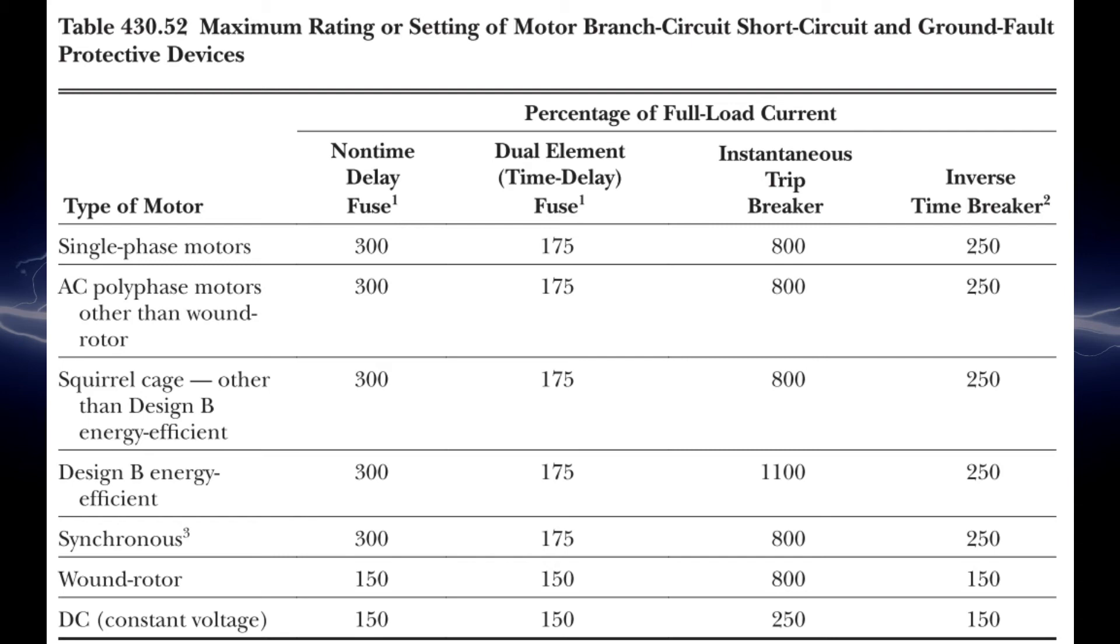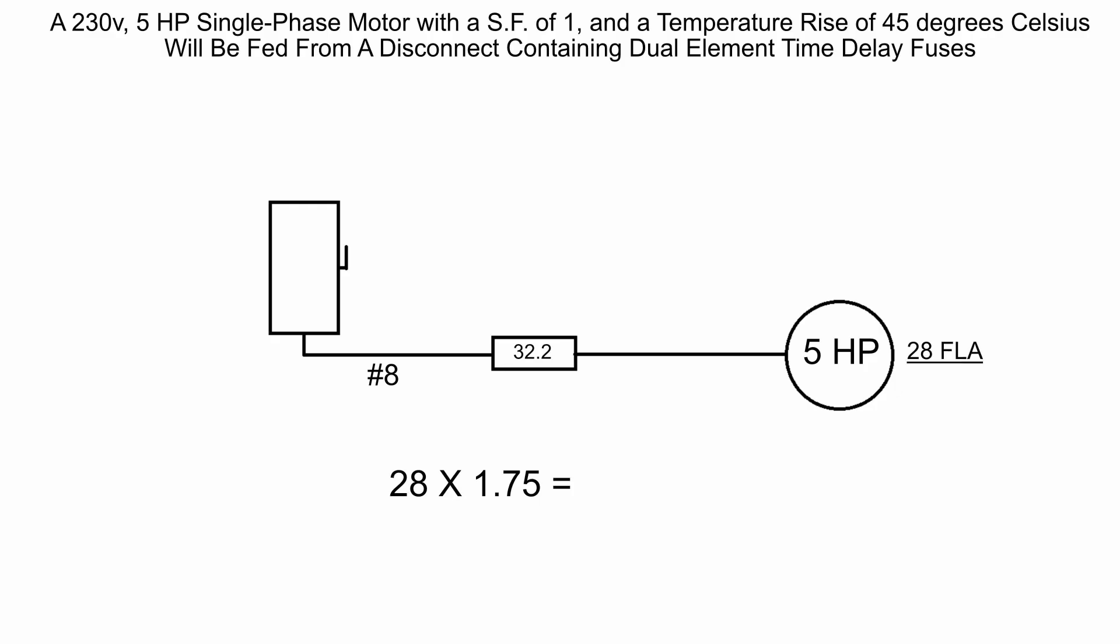In the first line we'll see single phase motors. We're using a single phase motor so that's the line we're going to use. We'll see under dual element time delay fuses 175 percent factor that we're going to use to determine that. We'll say 28, the full load amps, times 1.75 is going to give us 49 amps, which is what we're going to use to size the overcurrent device.